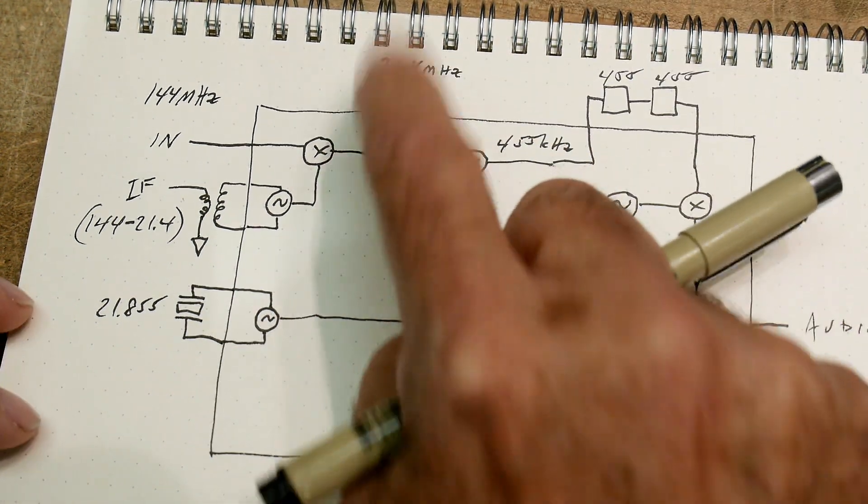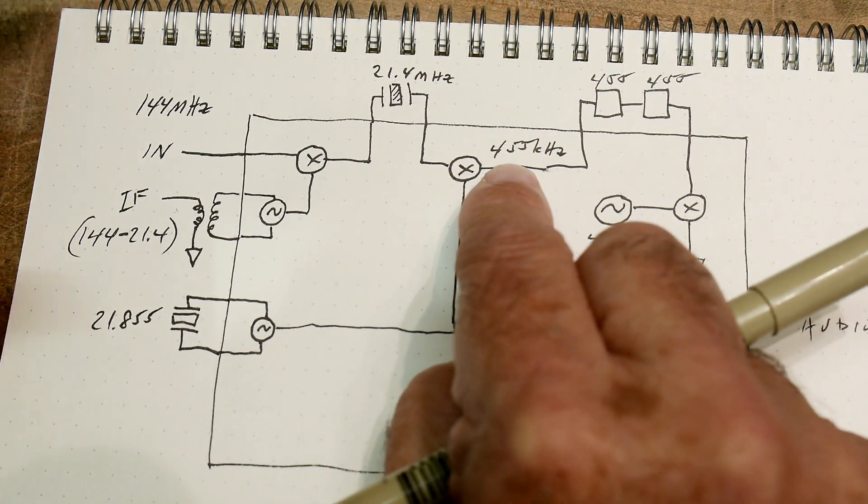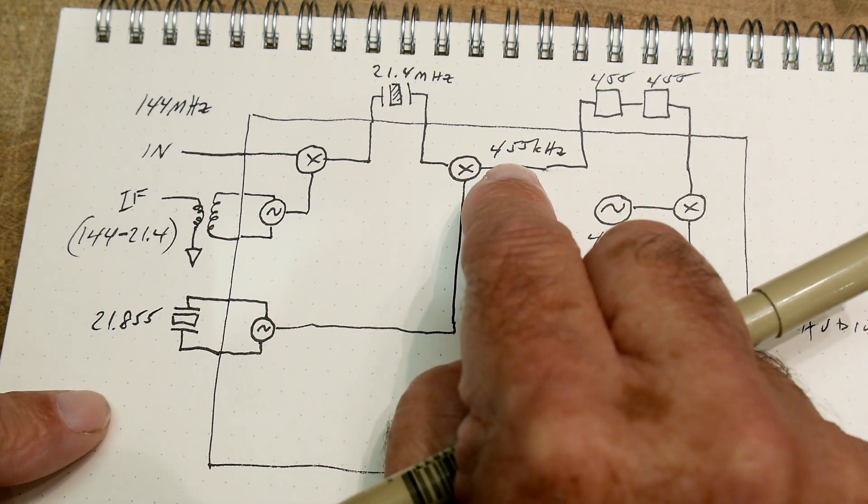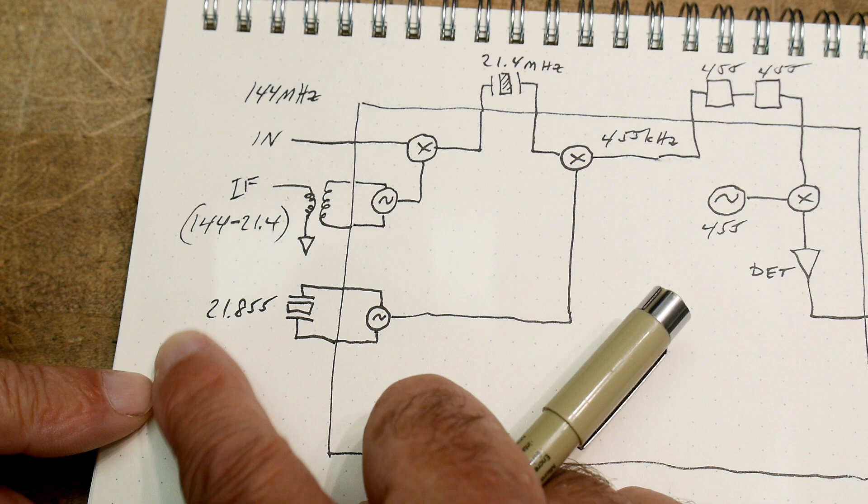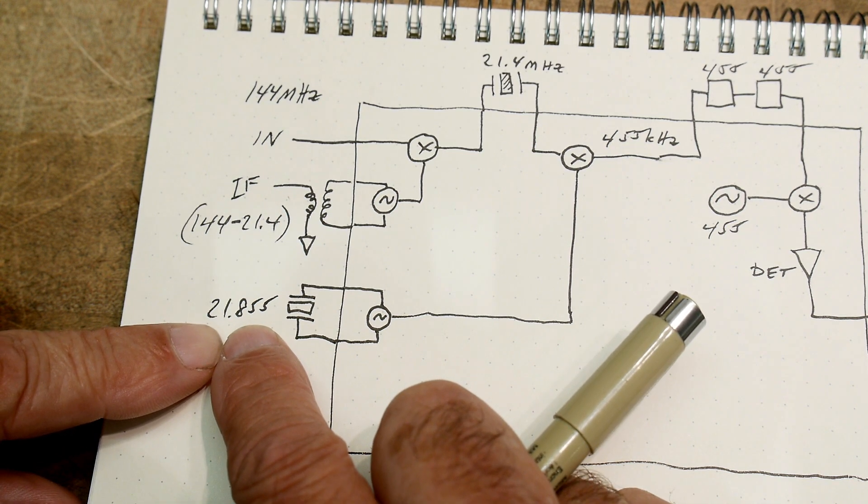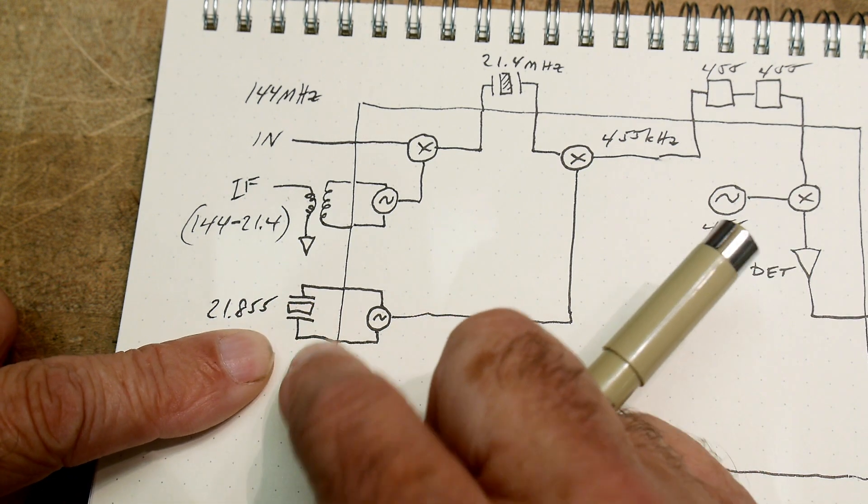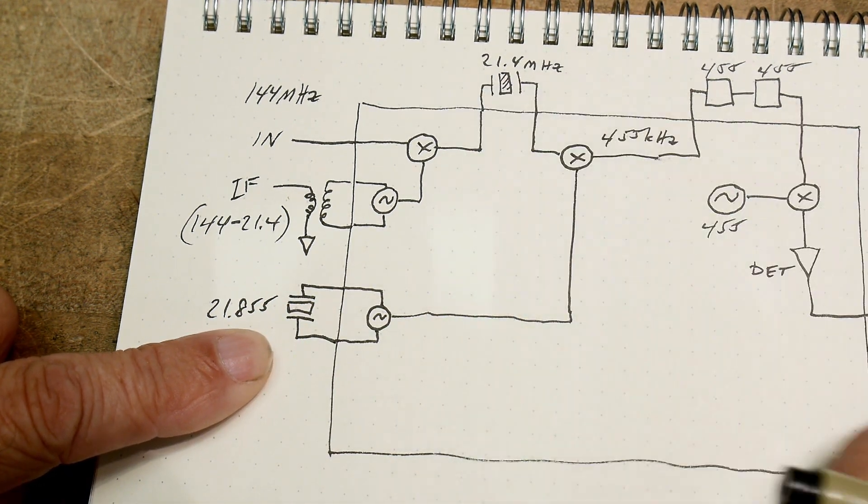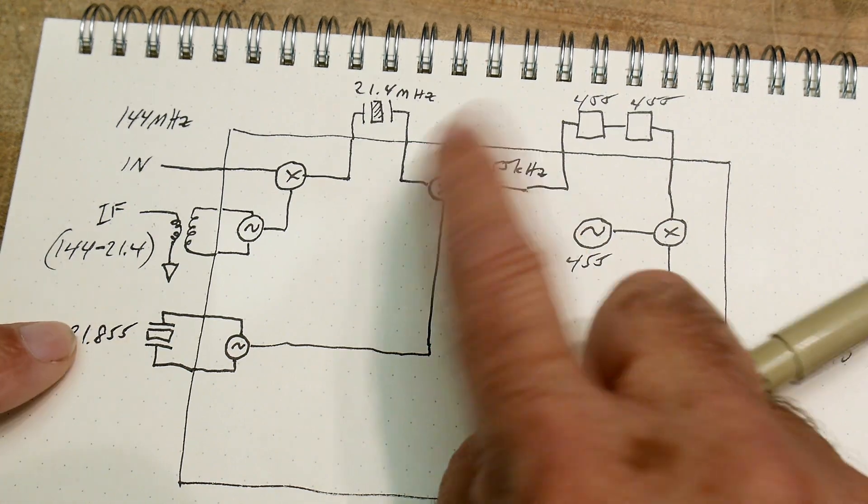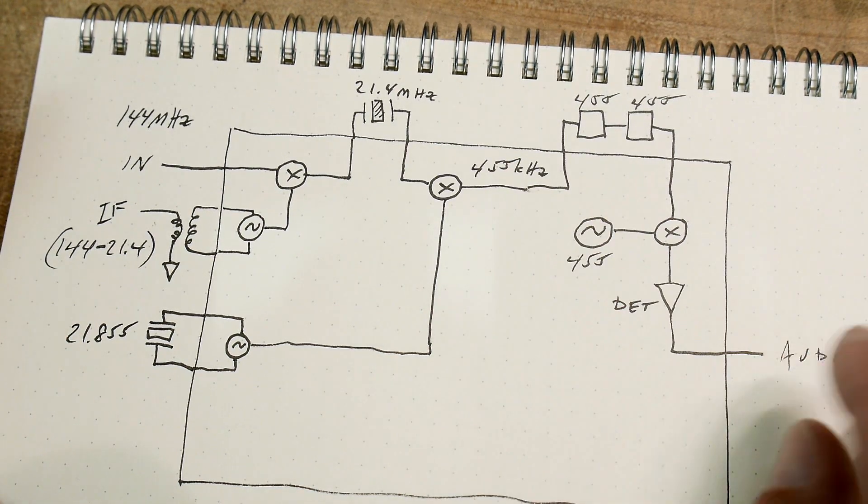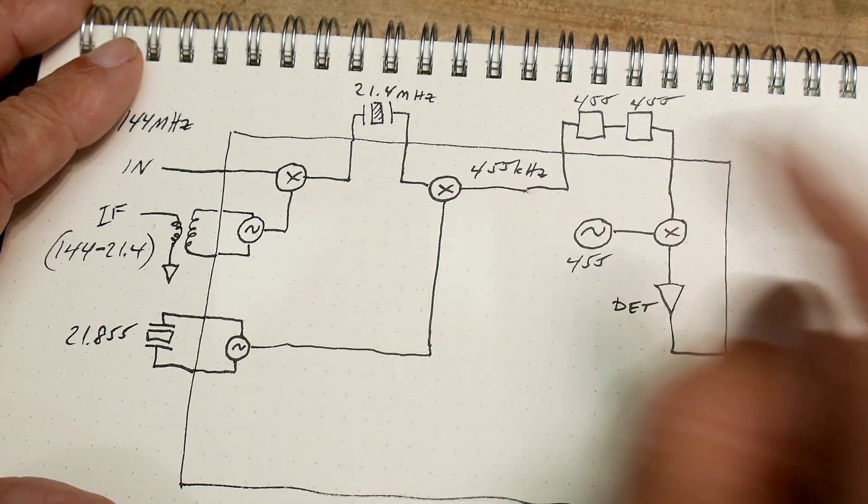So once we get our IF frequency here, we're going to mix it a second time. And this time we're going to mix it with 21.855. That's another external crystal, 21.855. Well, 21.855 minus 21.4 is 455. So our next IF frequency inside the chip is 455 kilohertz.